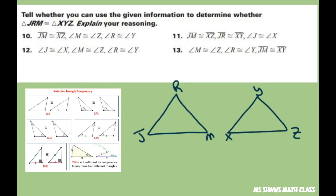And then for 11 we have JM is congruent to XZ, JR is congruent to XY, and angle J is congruent to angle X. So if you look at the, let me just put two tickers here. So that's angle side angle. Angle side angle is right here, so that follows under our rules. So for 11 that's a yes.